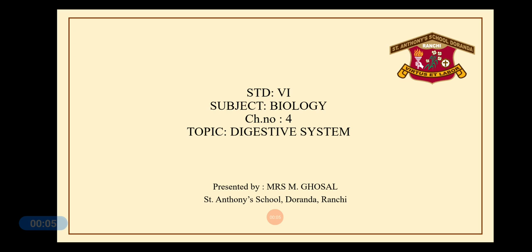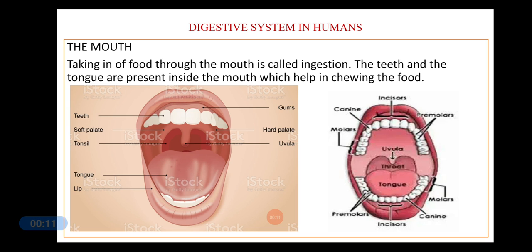In this video you will learn about certain parts of the digestive system. The digestive system in humans starts from our mouth. The mouth is bordered by the upper and the lower lips. There are two jaws in our mouth — the lower jaw can move, but the upper jaw is fixed.